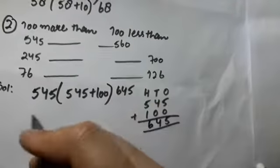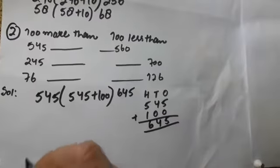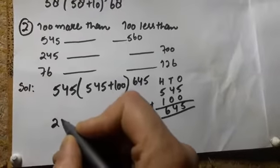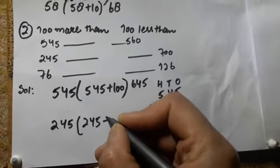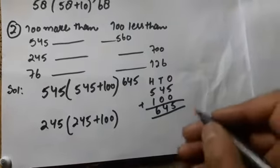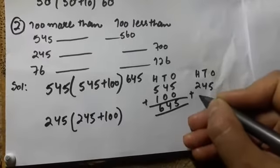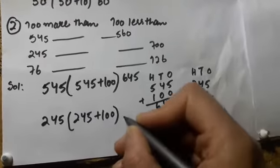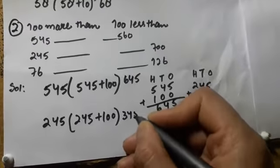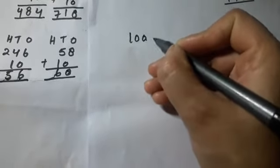645 — मतलब 545 को जब हमने 100 add किये तो 645 बना। एक और है — 245. इसको भी 100 add करना है। 245 plus 100: 5+0=5, 4+0=4, 2+1=3. तो बन गया 345. Dear students, इसके बागी parts आप खुद करेंगे। अब है 100 less than।